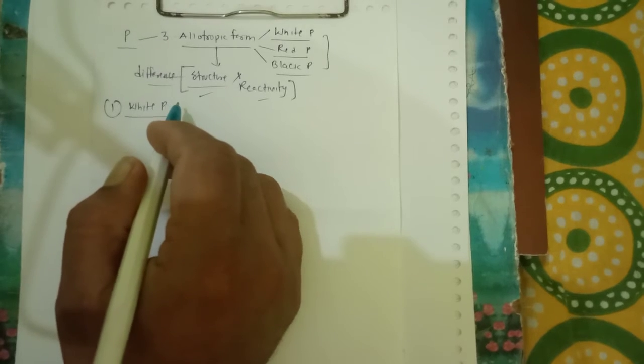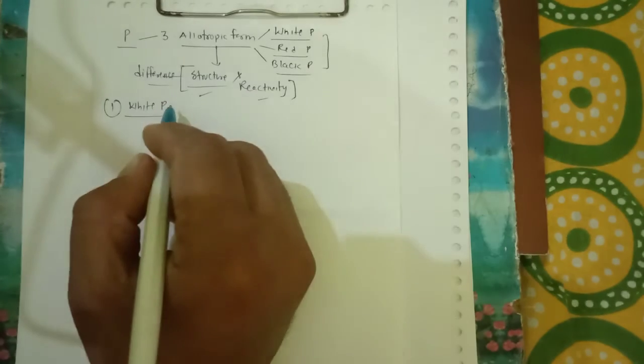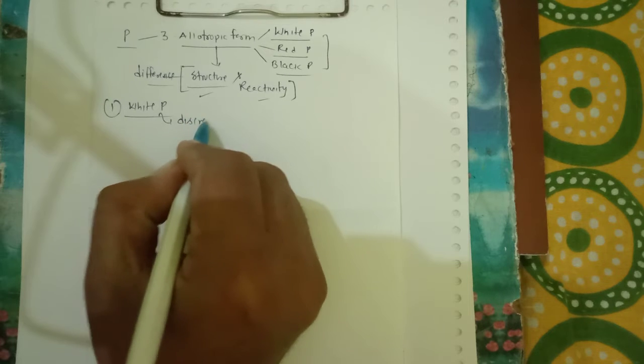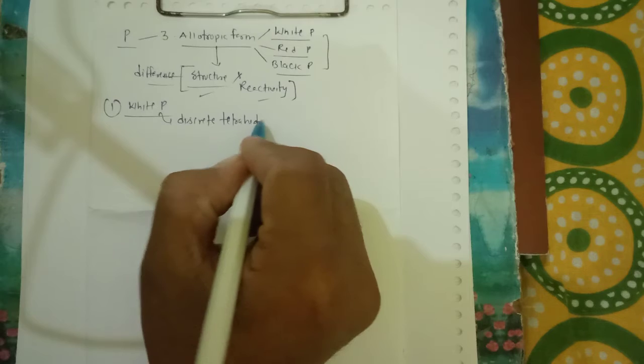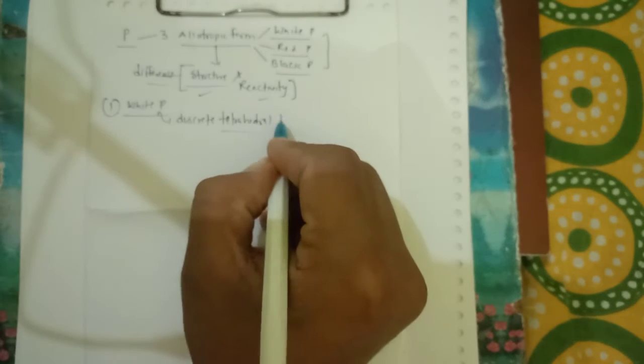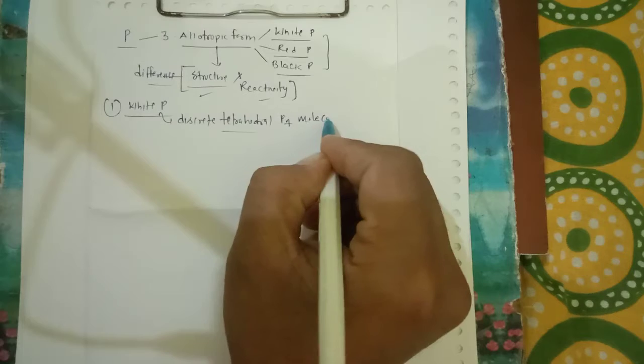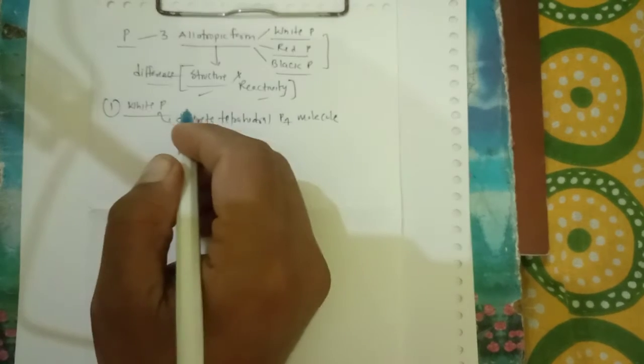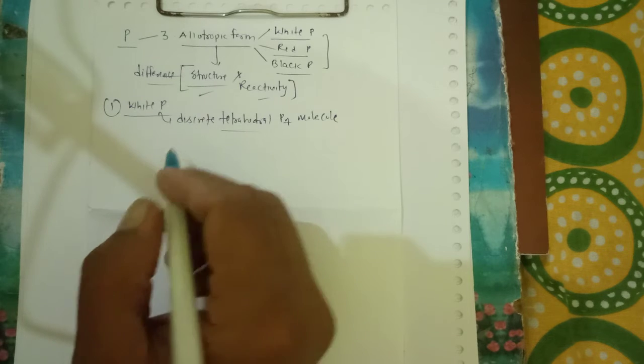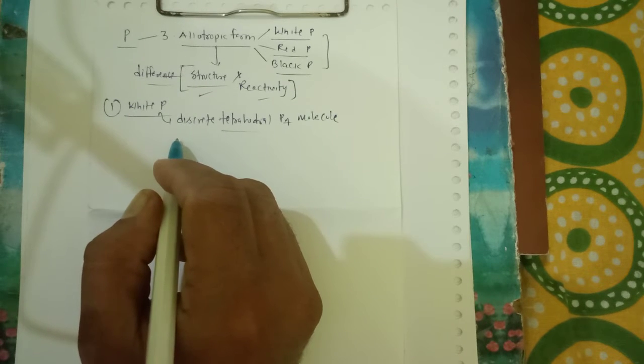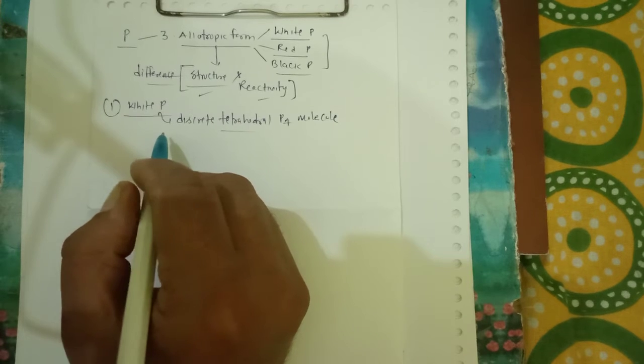Let us take the first one, that is your white Phosphorus. Here we will see that white Phosphorus consists of discrete tetrahedral P4 molecules. Angles in P4 molecule are only 60 degrees, so the structure is less stable because of angular strain.